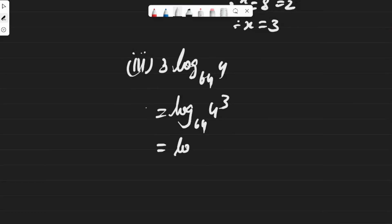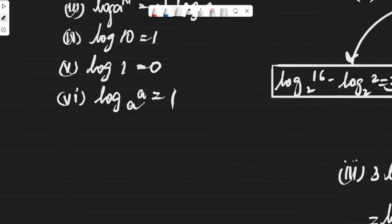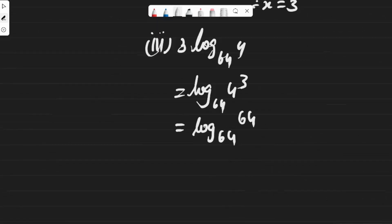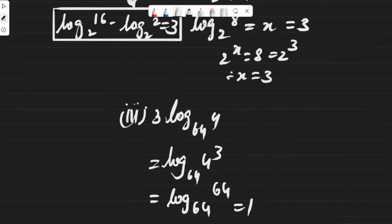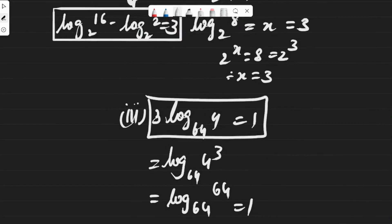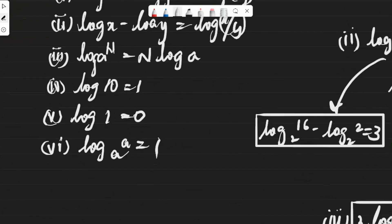4 cubed is 64 (since 16 times 4 is 64), so we get log 64 base 64. Using the sixth formula, log a base a equals 1, so log 64 base 64 equals 1. Therefore 3 log 4 base 64 equals 1.